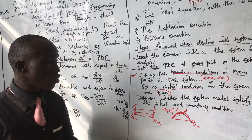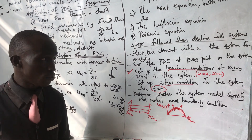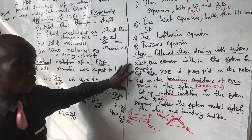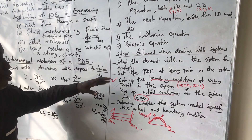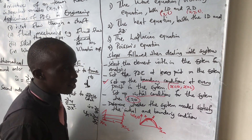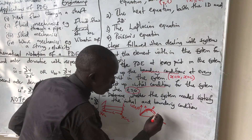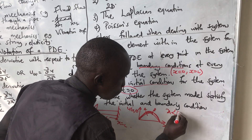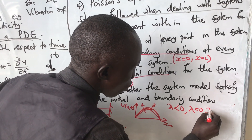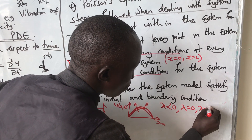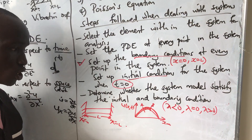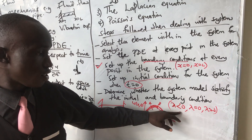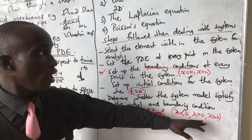After that, we see which model satisfies the boundary conditions. We test when the constant lambda is less than 0, when lambda equals 0, and when lambda is greater than 0. We shall see which of these conditions satisfies the PDE — whether it's when the constant is less than 0, equal to 0, or greater than 0.